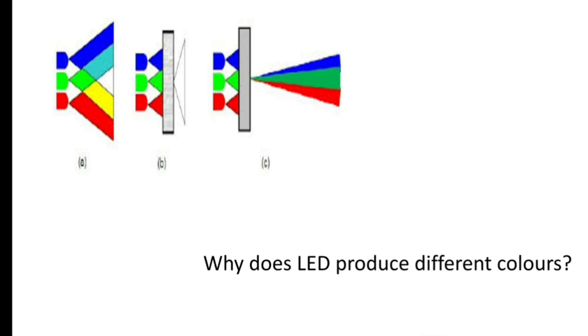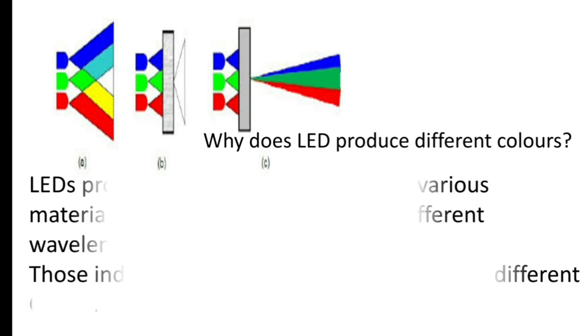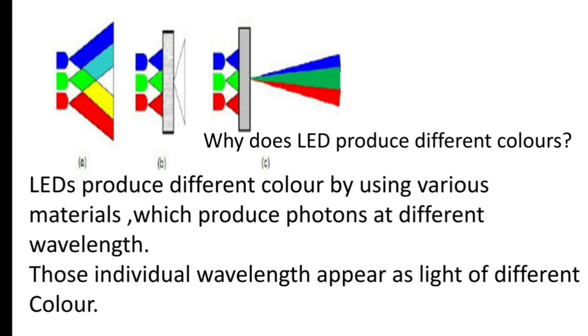Now, we will see why LED produce different colors. LEDs produce different colors by using various materials which produce photons at different wavelengths. Those individual wavelengths appear as light of different colors.